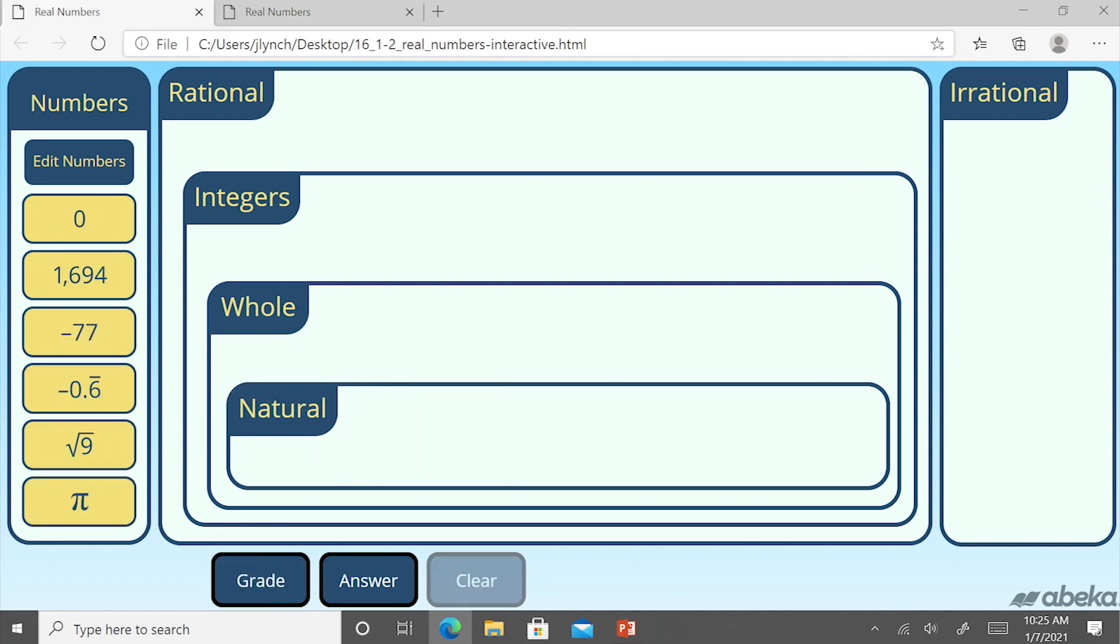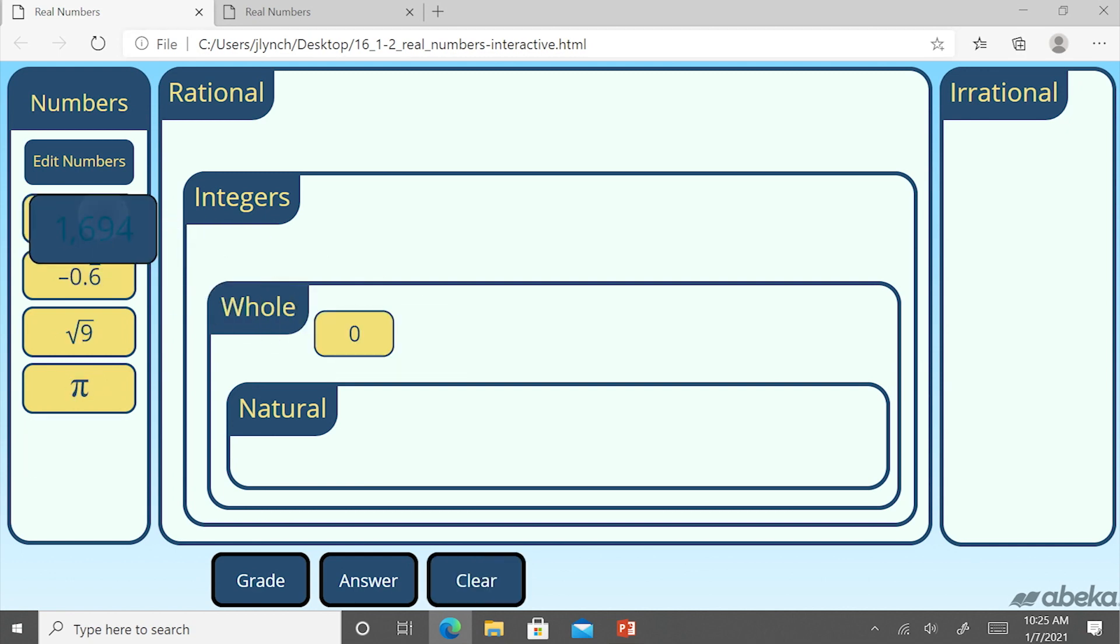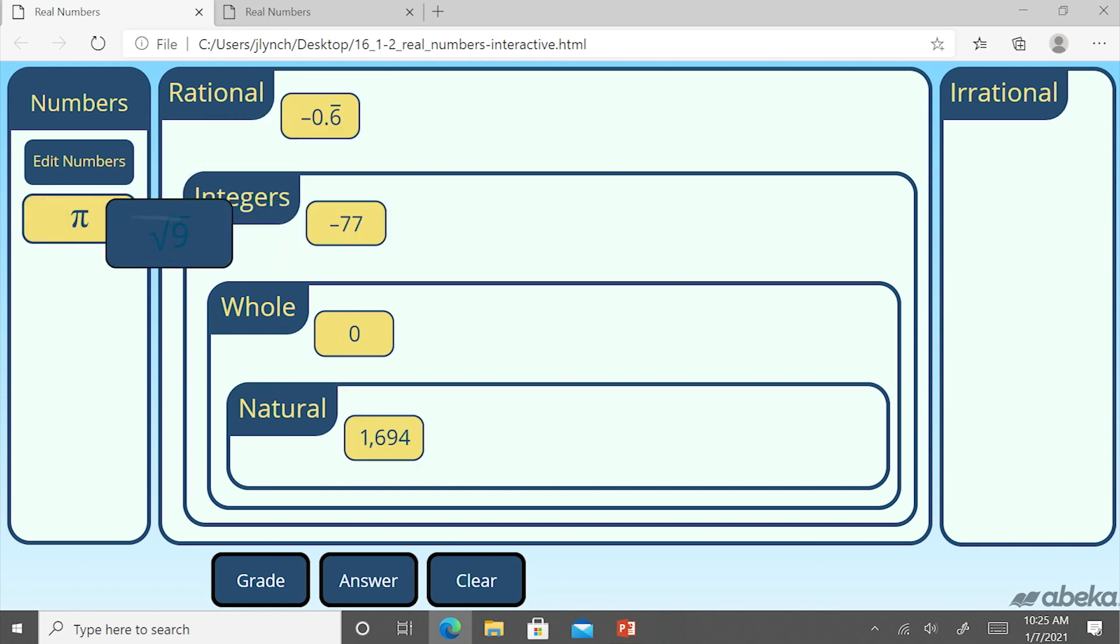Now, I've got one already filled out, a bunch of numbers over there at the side. So, let's imagine here, we've got a student coming up. They say, okay, zero, that's a whole number. We're going to drag this one here, this one here, here, and we'll pull both of these over to the irrational.